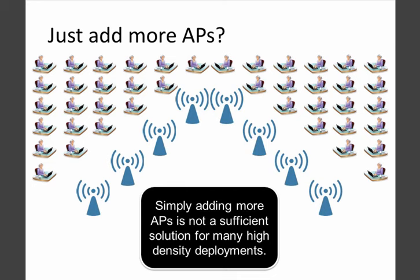A common misconception is that to do high density, you just add more APs and that fixes everything. The reality is that you probably will add more APs, but it's not just about adding APs — it's about adding them properly located and properly configured in order to successfully achieve high density.